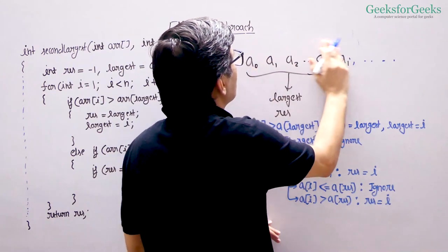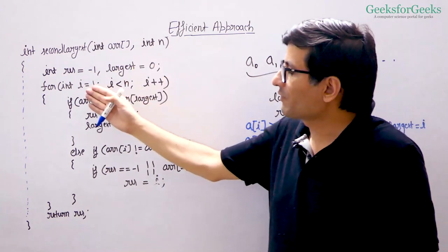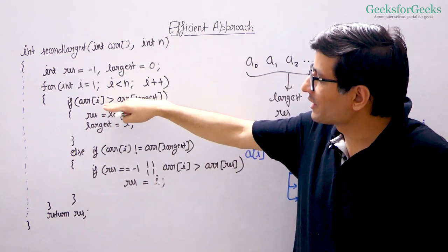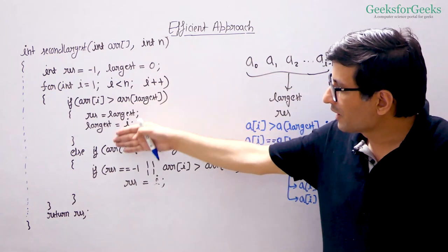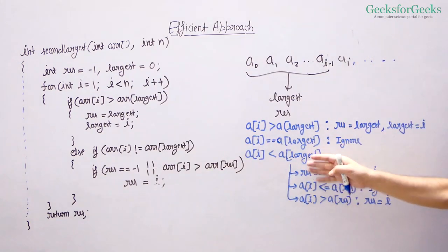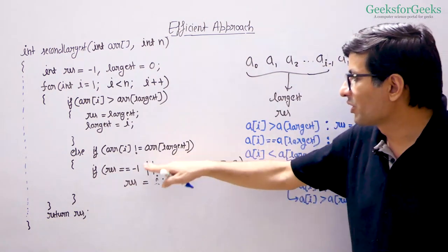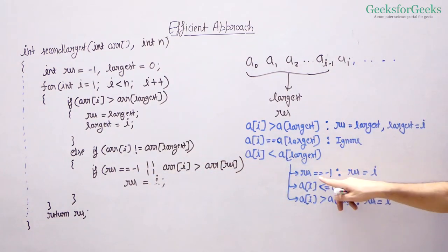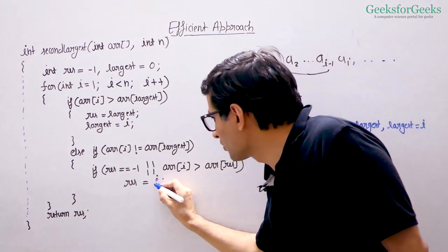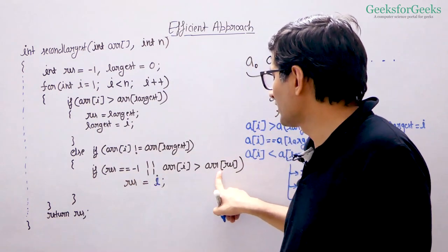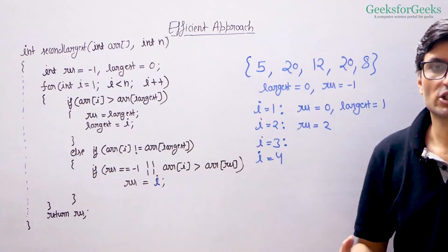That is the implementation of this idea. We initialize result as minus 1 and largest as 0, and start from the second element. If the new element is greater than the largest, we update result to largest and update largest to i. The else-if part handles the remaining cases — equal elements are simply ignored. Otherwise, if result is minus 1 or a[i] is greater than a[result], we update result to i; otherwise we ignore the element.